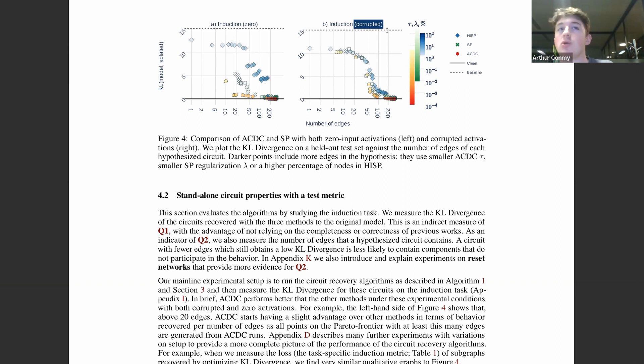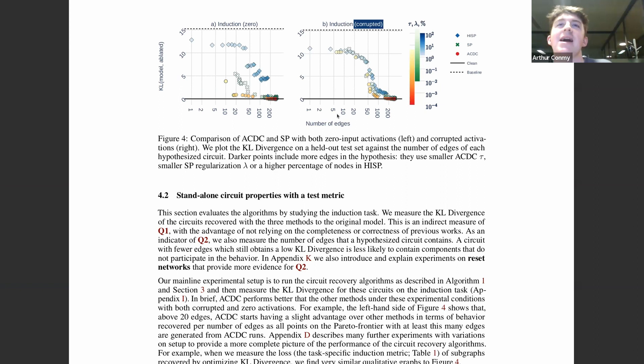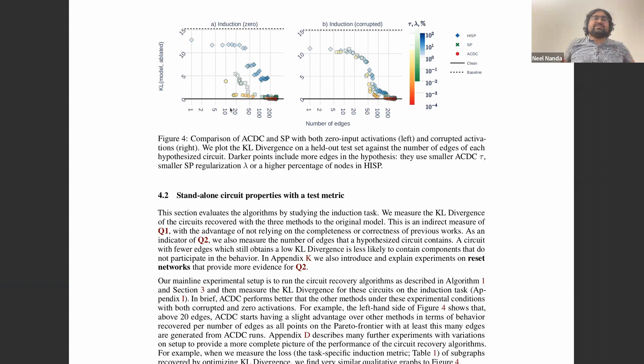One theory: it's plausible that in these models there are negative components that are actively unhelpful for induction tasks. By corrupting them you still make them do other tasks, but zeroing completely destroys them. So zeroing may be better because you want more destructive tools. But this is a surprising result and we're not sure what's happening. Mean ablation would be interesting to try as a future experiment.